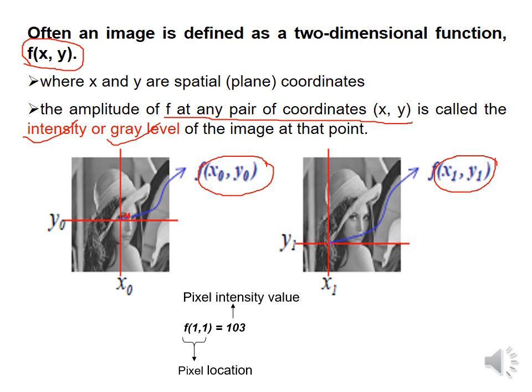How to represent it mathematically? If we write f(1, 1) = (1, 0, 3), then (1, 1) represents the pixel location and (1, 0, 3) gives us the pixel intensity value. It means (1, 1) is the x, y coordinate and (1, 0, 3) is the intensity level of that coordinate.